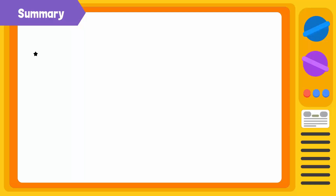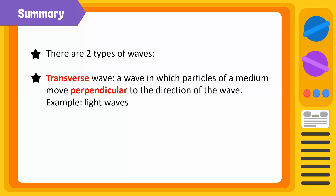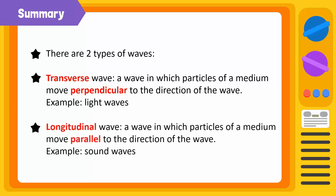Today, we've learned that there are two types of waves. One, a transverse wave is a wave in which particles of a medium move perpendicular to the direction of the wave — light waves are transverse waves. Two, a longitudinal wave is a wave in which particles of a medium move parallel to the direction of the wave — sound waves are longitudinal waves.